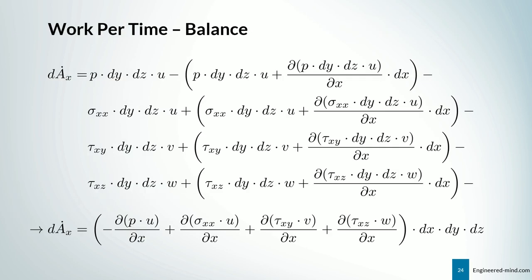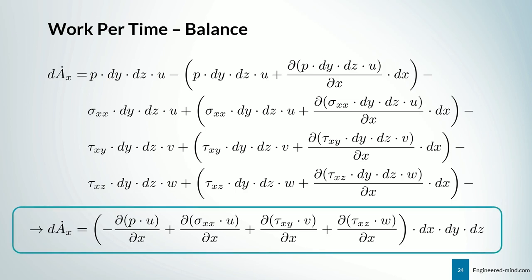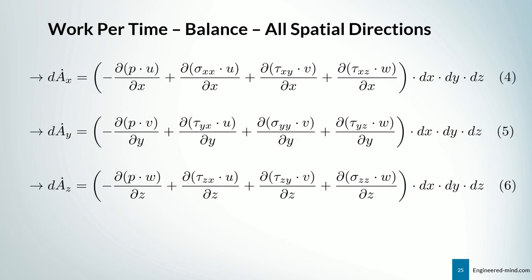Next we have the work per time balance, which is dȧ. We perform the balance in the x-direction, and some things drop out, giving us an equation at the bottom. We then do this for all three spatial directions, resulting in Equations 4, 5, and 6.